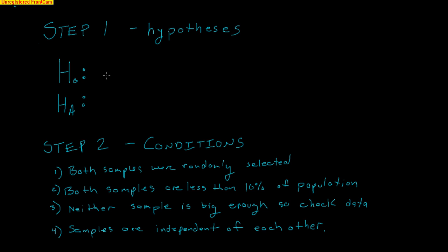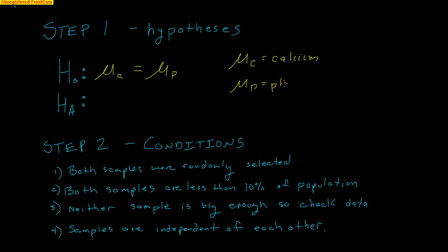Step one — hypotheses. The null hypothesis is that the true average for the calcium group (mu_c) equals the true average for the placebo group (mu_p). Note that hypotheses always use mu because we're referencing true population values. Here c represents the calcium group and p represents the placebo group, and the mean represents the average drop in blood pressure. The alternative is that mu_c is greater than mu_p — we want the calcium group to have a much higher drop in blood pressure than the placebo group.